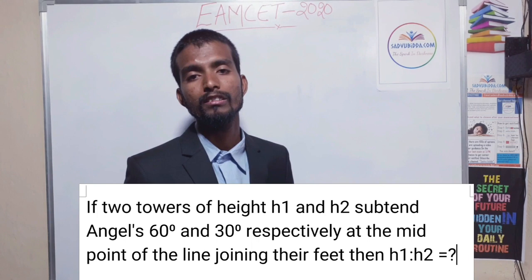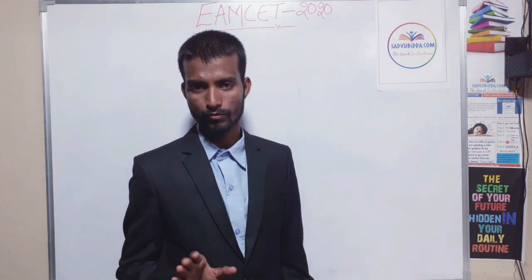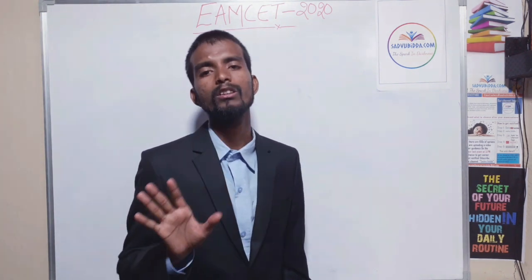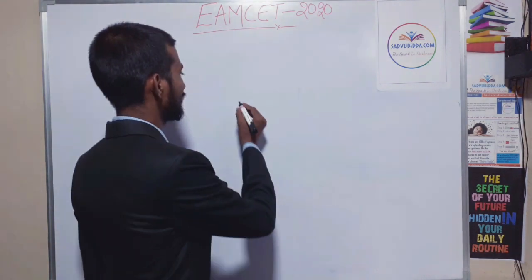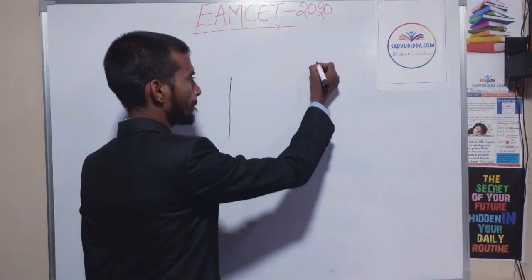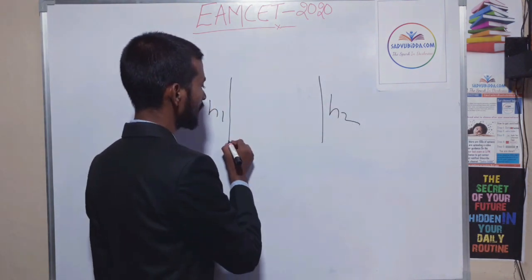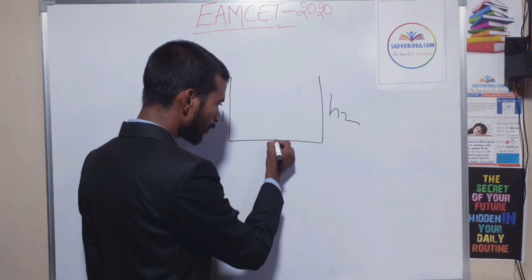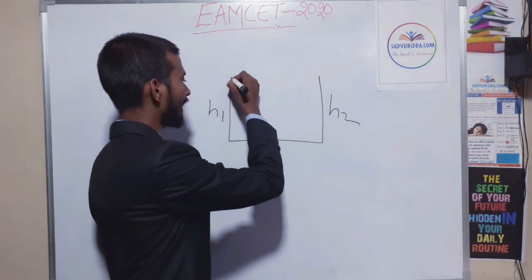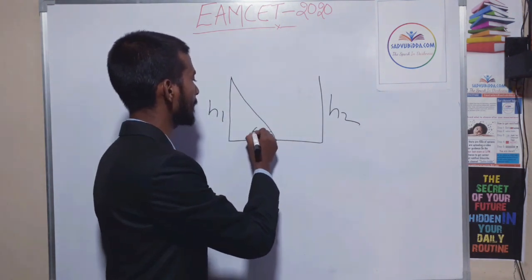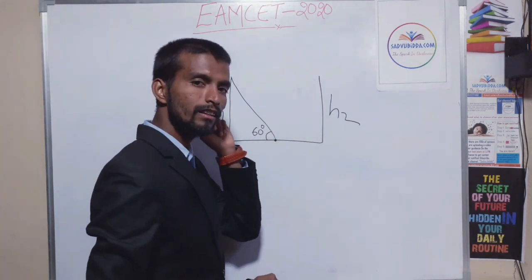First, you have to understand the question. Once you understand the question, 80% of your problem is solved. This is a very simple question. There are two towers, H1 and H2, separated by a certain distance. From the midpoint of this distance, tower H1 is making an angle of 60 degrees, and tower H2 is making an angle of 30 degrees.